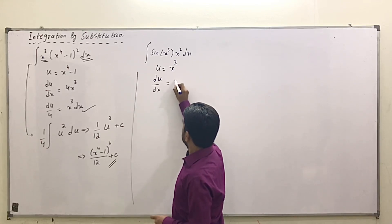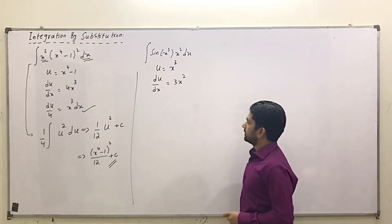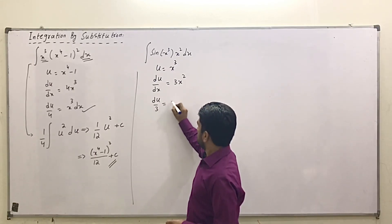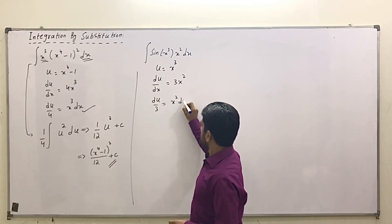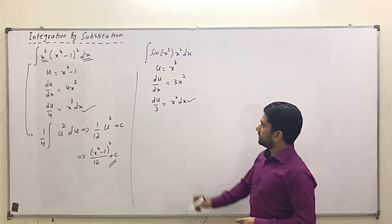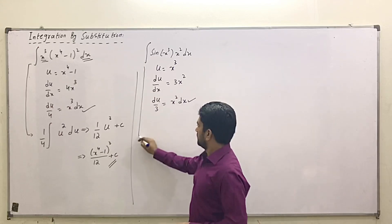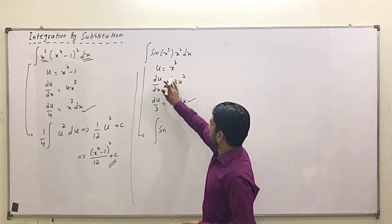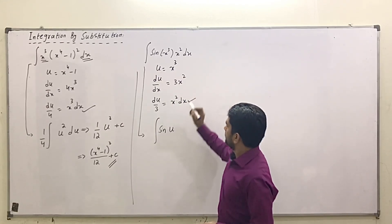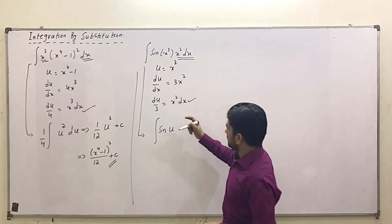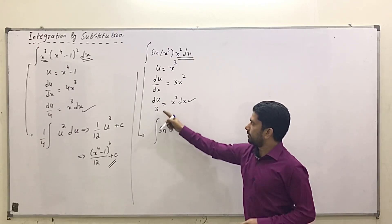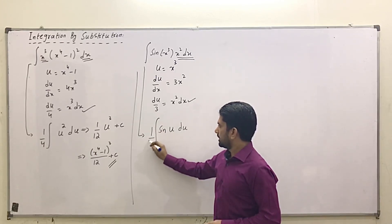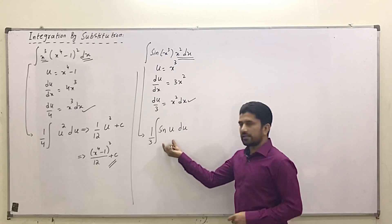With u = x³, taking the derivative gives du/dx = 3x². Separating terms, I get du/3 = x² dx. Now rewriting the integral: sin remains as is, u replaces x³, and x² dx becomes du/3. So du goes inside and 1/3 goes outside the integral.